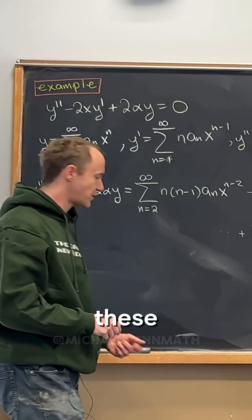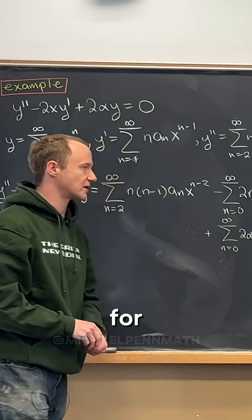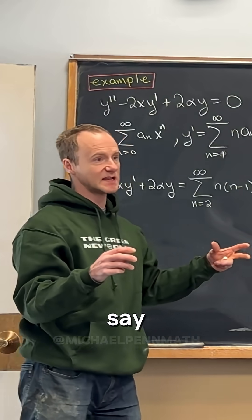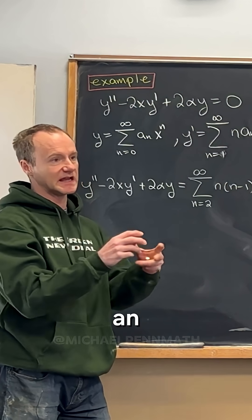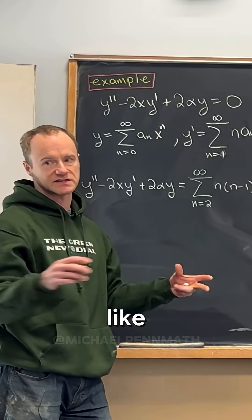Okay, so now almost all of these parts are good to go for combining. Because when I say good to go with combining, we need the same power of x. We need it indexed so that the x looks like the same power.